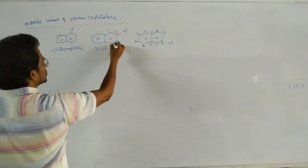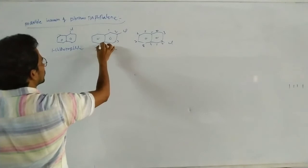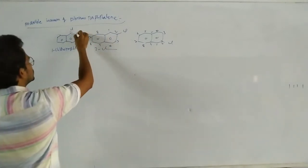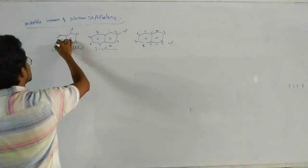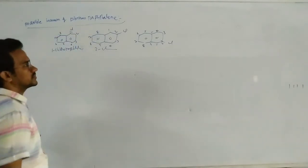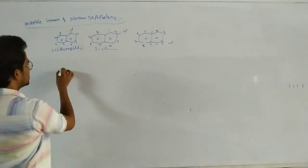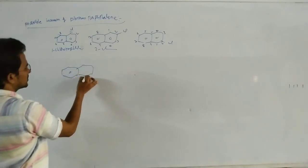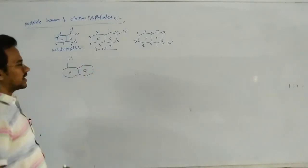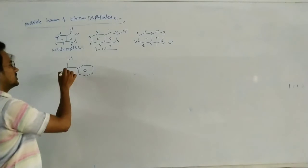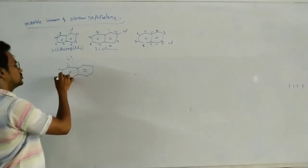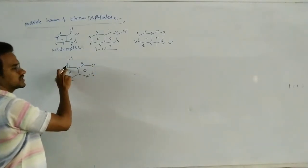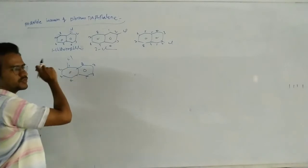So here counting: 1, 2, 3, 4, 5, 6, 7, 8. We always have to start the numbering from the substituent. This confirms it is 1-chloronaphthalene.